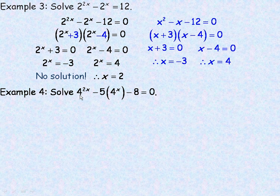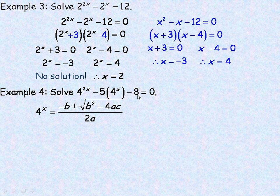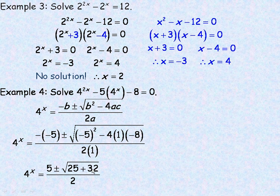When you have a quadratic equation you can't factor, you use the quadratic formula. Here, because it's 4 to the 2x instead of x squared, the result is 4 to the x equals negative b plus or minus the rest of the quadratic formula. With a equals 1, b equals negative 5, and c equals negative 8, we fill those in. Negative negative 5 is 5; under the root, negative 5 squared is 25, and negative 4 times 1 times negative 8 is positive 32, so 25 plus 32 equals 57.